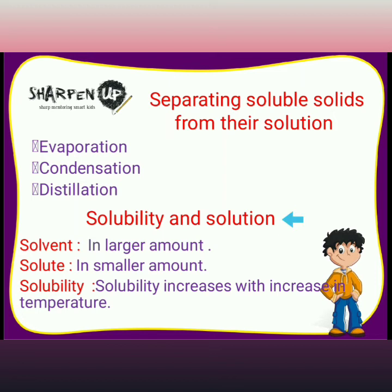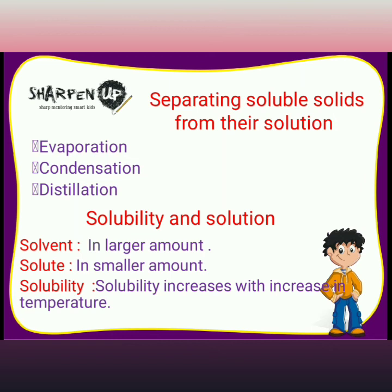Now, solubility and solution. Water is a universal solvent because it can dissolve many things in it. When a substance is dissolved in water, it forms a solution. The substance that dissolves is called the solute, and the substance in which the solute dissolves is called the solvent. The resulting mixture is called the solution. A solution in which no more solute can be dissolved at a given temperature is called a saturated solution. The extent to which a substance gets dissolved in a liquid is called its solubility.